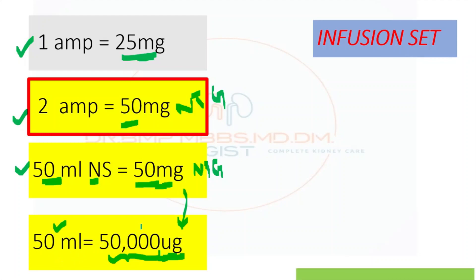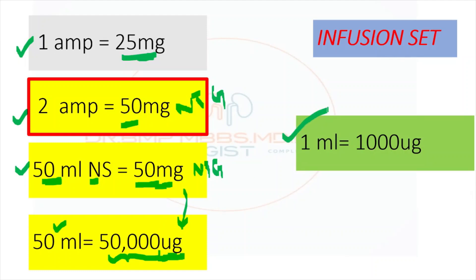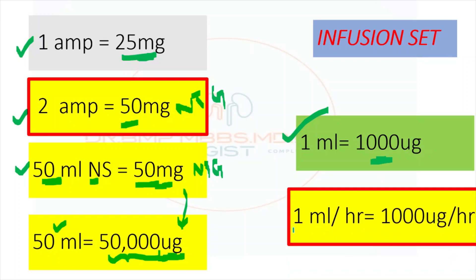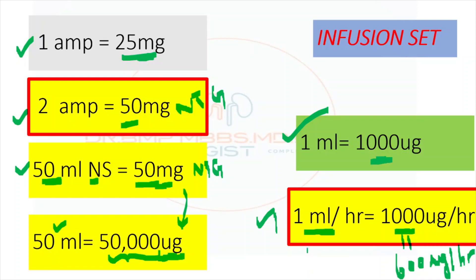Our target starting dose is approximately 600 micrograms per hour. In the infusion pump, you can set a rate of 1 ml per hour, which gives around 1,000 micrograms per hour — very close to the starting dose of 10 micrograms per minute, which equals 600 micrograms per hour.